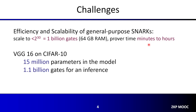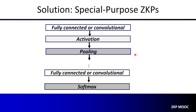It really takes minutes to hours to generate such a proof. If you take an example from the machine learning domain — for example, VGG16, a convolutional neural network on the CIFAR-10 dataset — the model itself contains 15 million parameters. If you implement a single inference manually as a circuit, the circuit would have 1.1 billion gates, which means it will take hours or even days to generate a single proof, and it's not going to happen because of memory limitations.